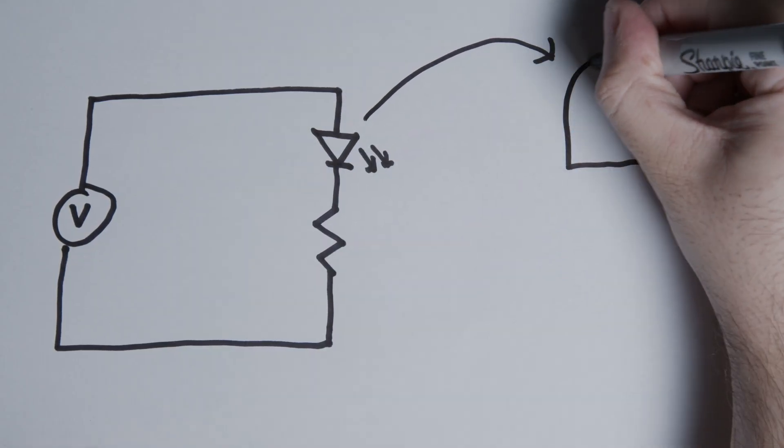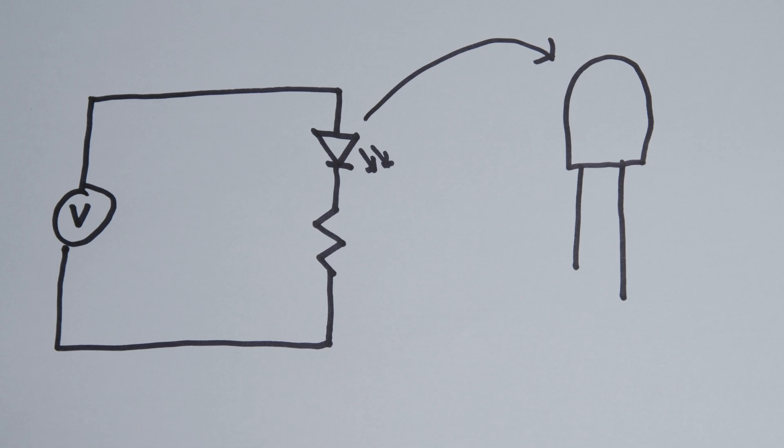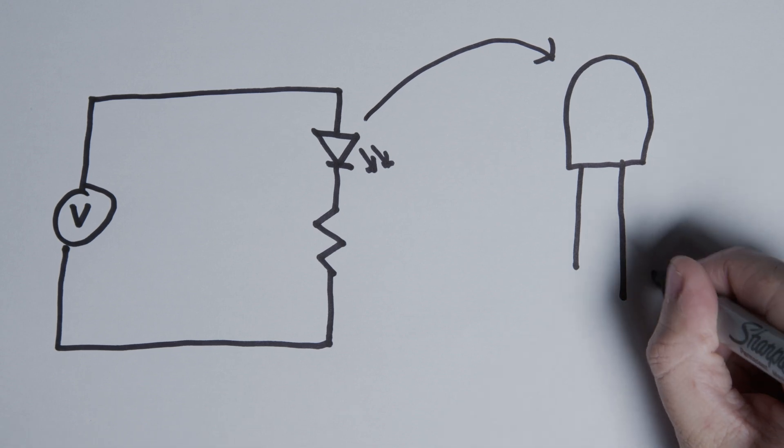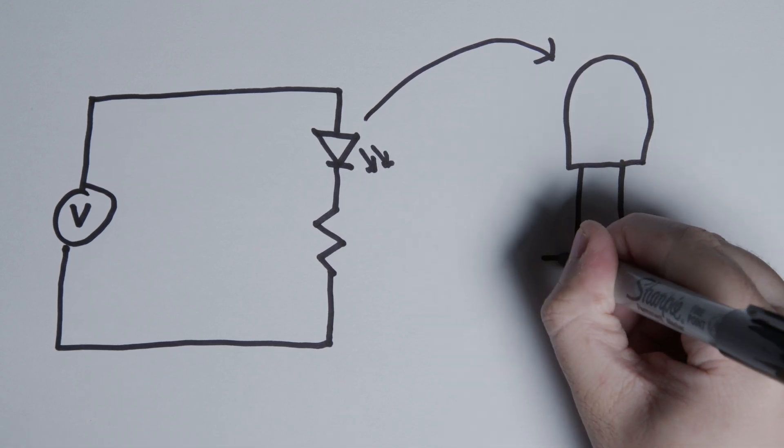Looking at an LED, we can see that one leg is going to be longer than the other. The longer lead is the anode, the positive side, and the shorter lead is the cathode, the negative side. So when we put the LED in our circuit, we want the long lead to connect to the positive side of the power supply.